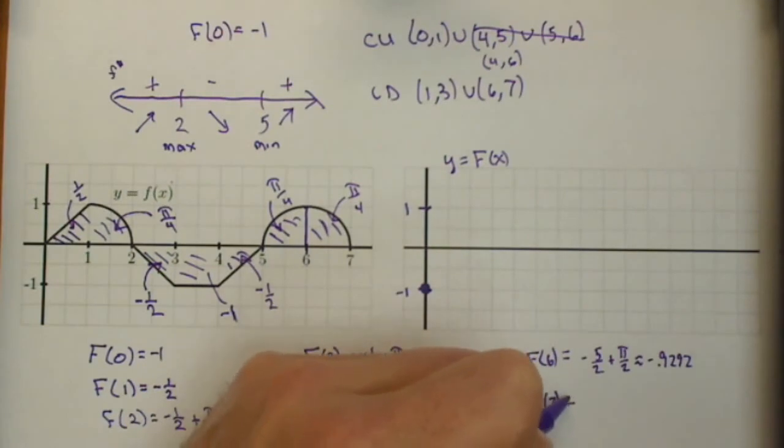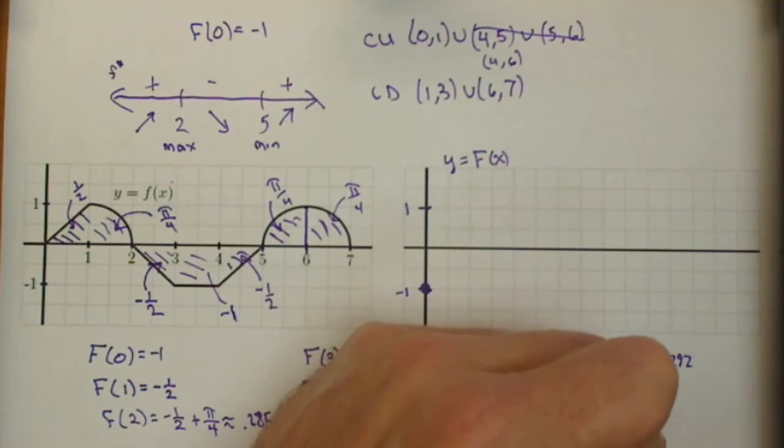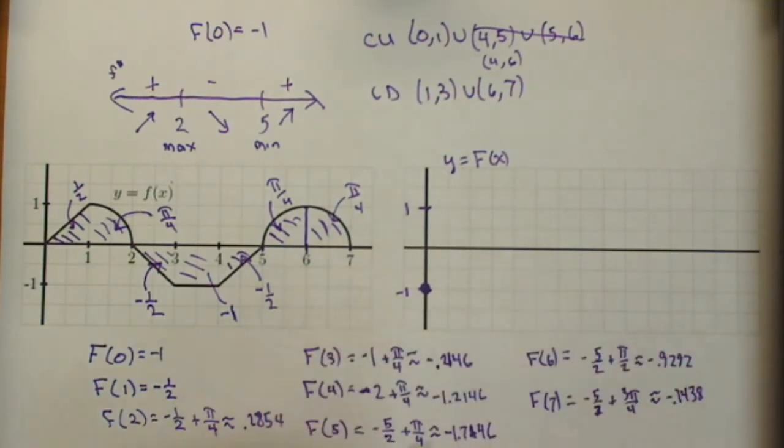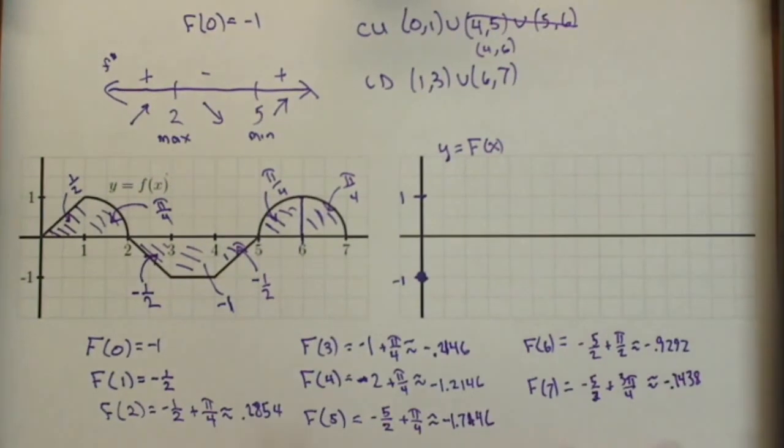And f of 7, we're going to add on another pi over 4. So negative 5 halves plus 3 pi over 4. Again, for plotting purposes, I'm just going to put it in here as a decimal so it makes it easier for us to plot on our axes. So there's all our values.